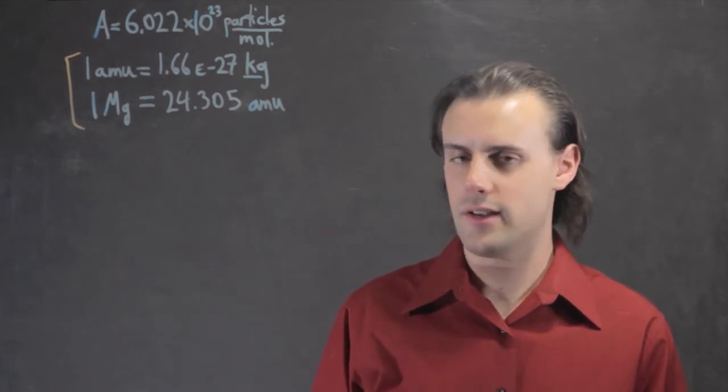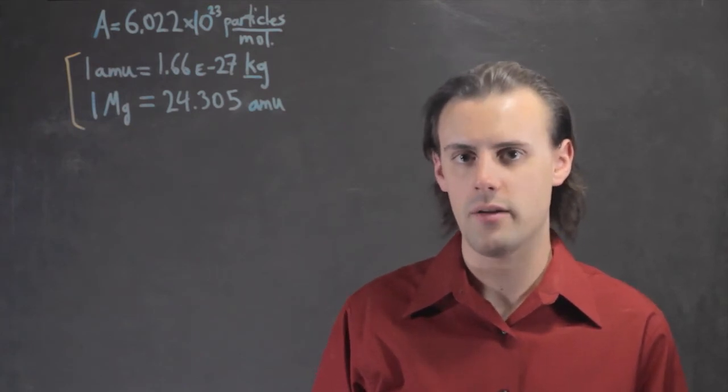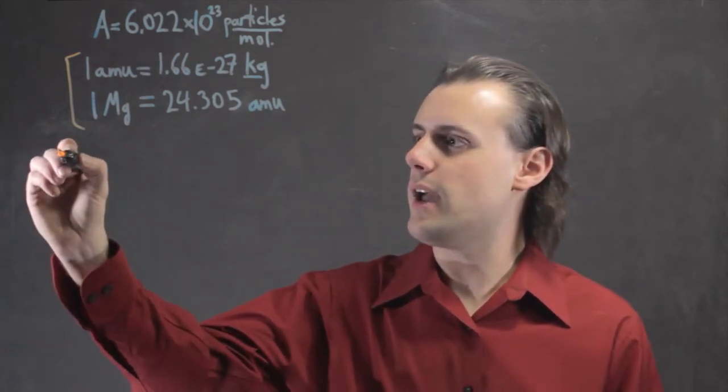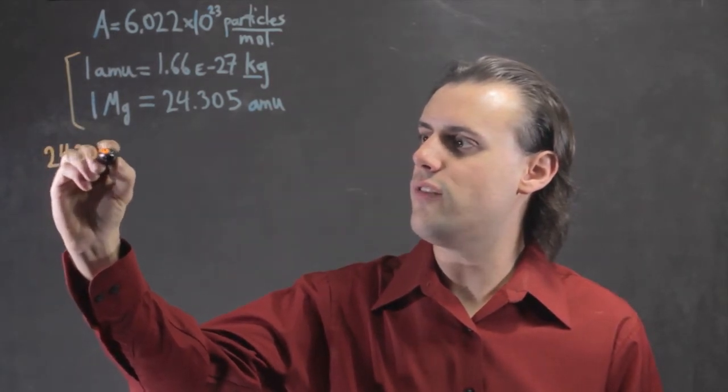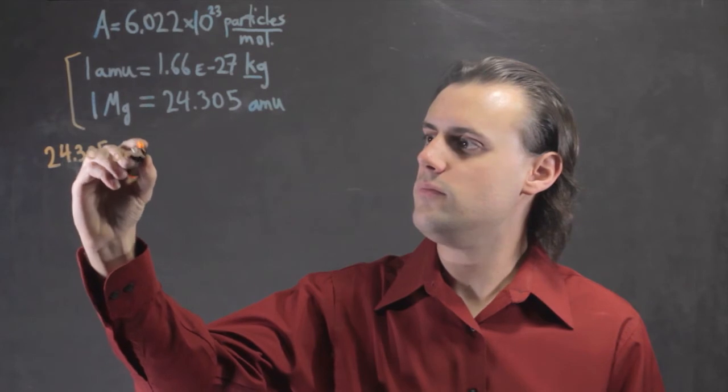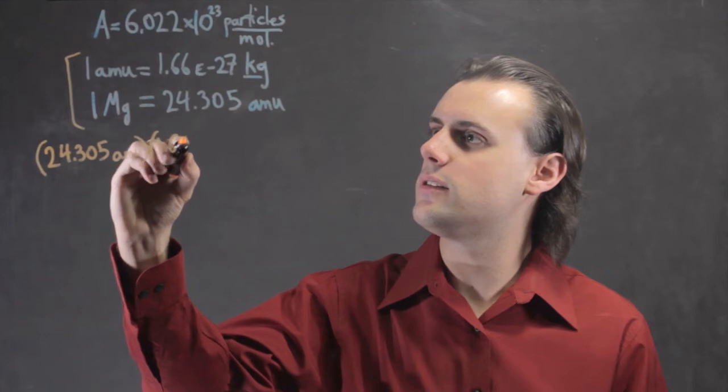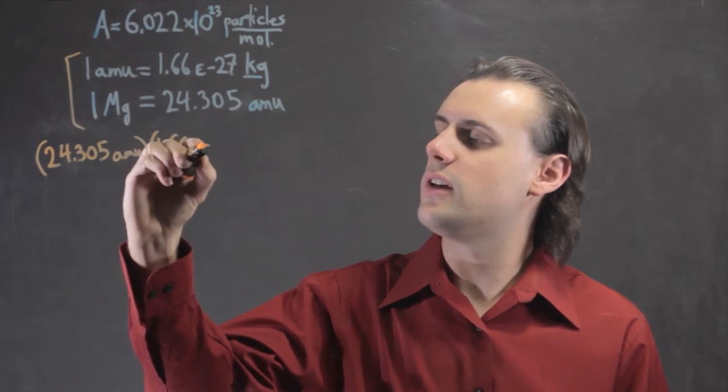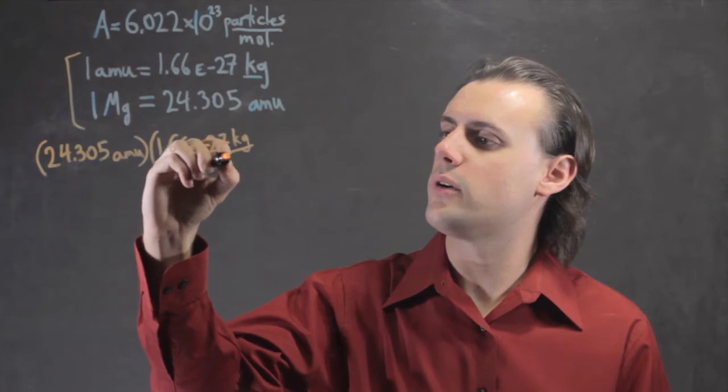So to calculate the kilogram equivalent of the mass for one atom of magnesium, we have 24.305 AMU, and we multiply that with 1.66 times 10 to the negative 27 kilograms per AMU.